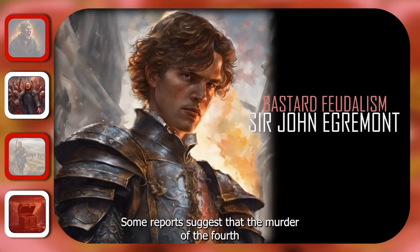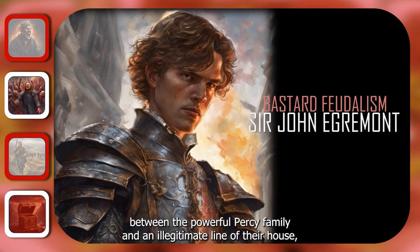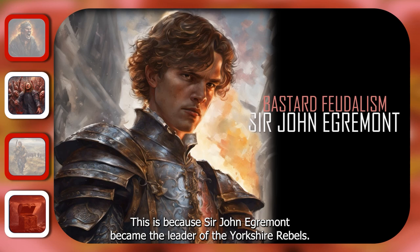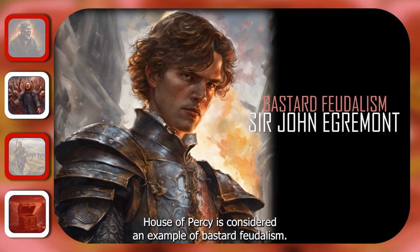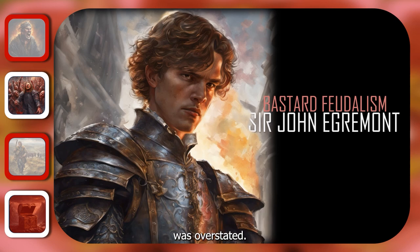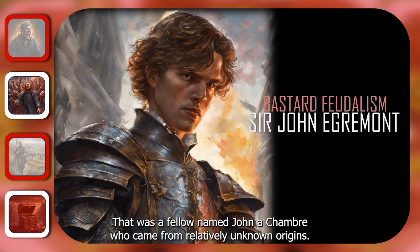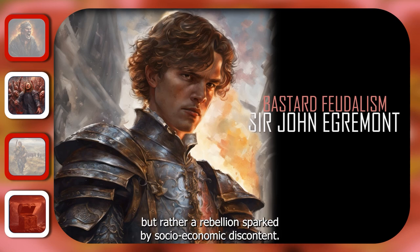Some reports suggest that the murder of the 4th Earl of Northumberland was an example of a regional power struggle between the powerful Percy family and an illegitimate line of their house, the Egremonts. Sir John Egremont became the leader of the Yorkshire rebels, and his personal ambition to overthrow the established and legitimate House of Percy is considered an example of bastard feudalism. However, other historians argue that the case for bastard feudalism was overstated. Sir John Egremont was not the original leader of the rebels — that was a fellow named John Echamber who came from relatively unknown origins, showing that at its heart this was a rebellion sparked by socio-economic discontent.